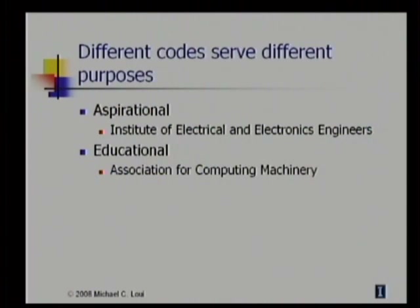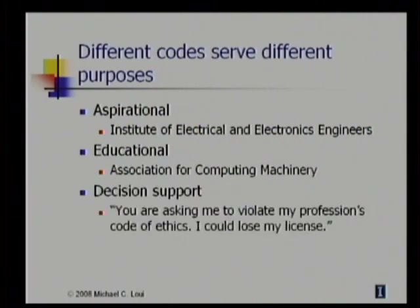In addition, the code is published with a set of cases that illustrate the application of the code in making decisions. Third, a code supports the decisions that an engineer might make. It allows an engineer to object to unsafe practices, not just as a matter of individual conscience, but with the weight of the entire profession. The engineer could say, you are asking me to violate my profession's code of ethics — I could lose my license. So, state boards of registration can revoke an engineer's license for violations of registration laws, which are also informally called codes of ethics.